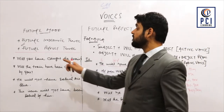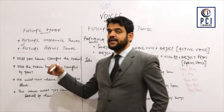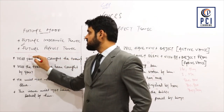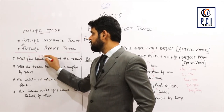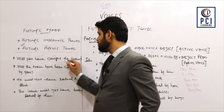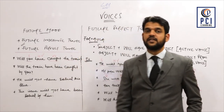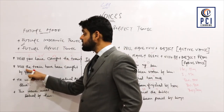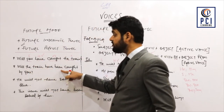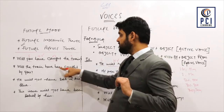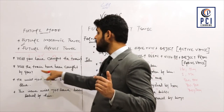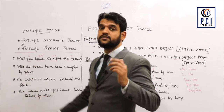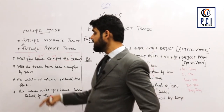Moving to the next example: 'Will you have caught the train?' — also an interrogative sentence. 'You' is the subject, 'will have' is the helping verb, 'caught' is the third form, and 'the train' is the object. So 'the train' as object comes to the subject place: 'Will the train have been caught by you?' — here 'you' stays the same as both subject and object pronoun.